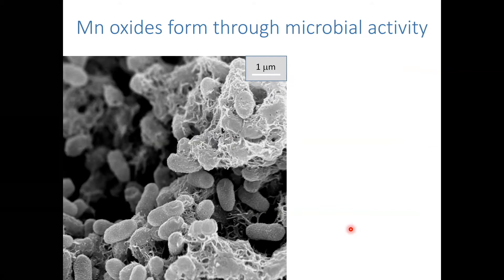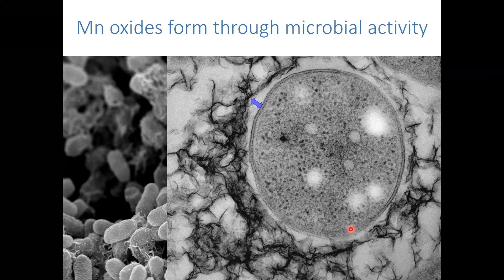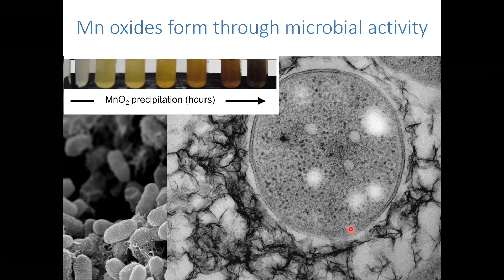Their formation is driven through microbial activity and the homogeneous oxidation of aqueous manganese. The homogeneous oxidation of aqueous manganese is extremely slow, but microbial activity through a number of different enzyme systems accelerates the rate of formation by up to five orders of magnitude. This SEM image shows Pseudomonas putida GB1, a biofilm-forming bacteria, and in cross section you can appreciate that the manganese oxides are deposited extracellularly in a biofilm matrix.